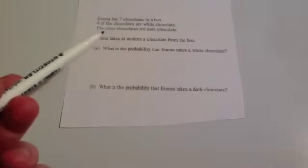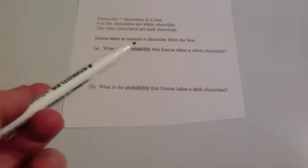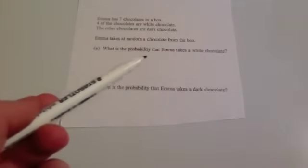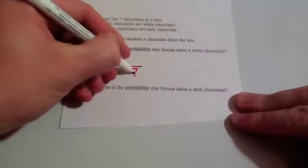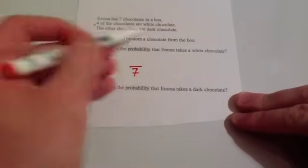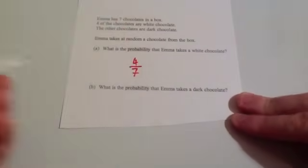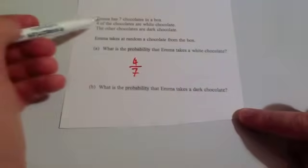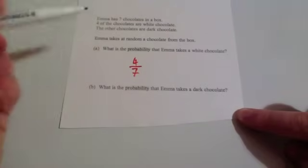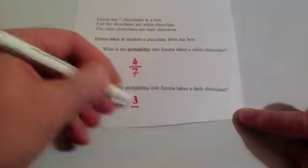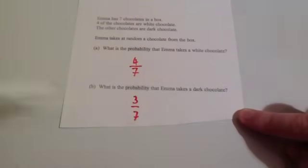Emma has seven chocolates in a box. Four of the chocolates are white chocolate; the other chocolates are dark chocolate. Emma takes a chocolate at random from the box. What is the probability Emma takes a white chocolate? Altogether there's seven chocolates, so the denominator is seven, and four of them are white chocolate, so the probability of getting a white chocolate is four-sevenths. If there are four white and seven altogether, that means there must be three dark chocolates. So the probability she gets a dark chocolate is three-sevenths.